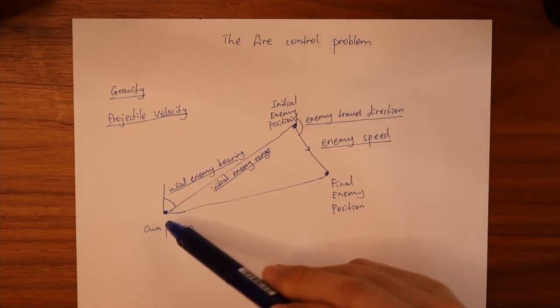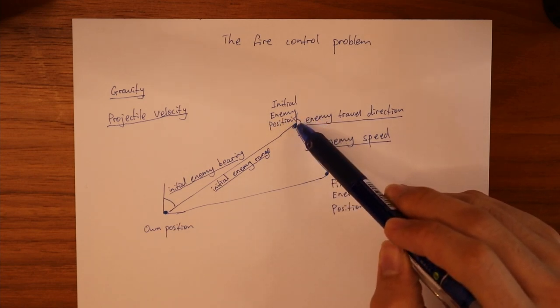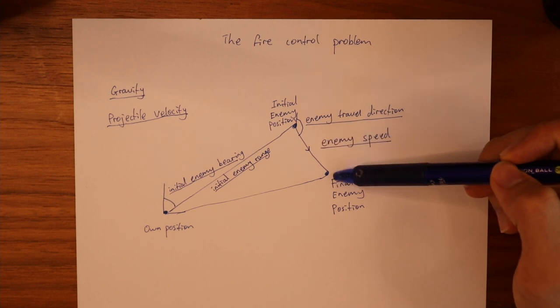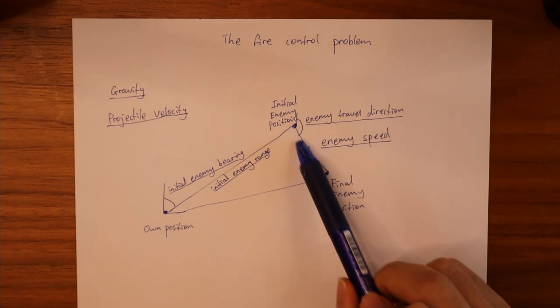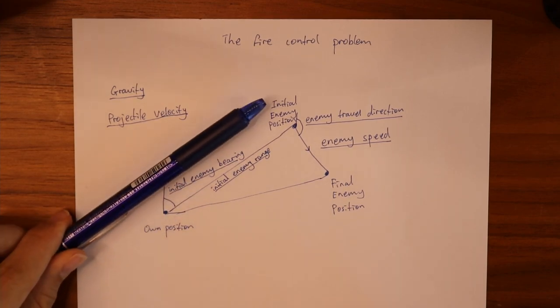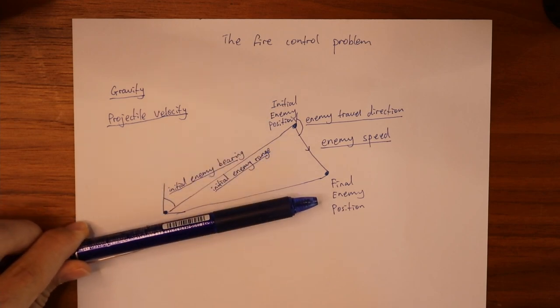Because by the time the projectile has went through the air and impacted the point where the enemy was, the enemy would have moved since this is the enemy travel direction. So this is the point where the enemy will be at the point of impact. So instead of aiming in this direction you need to be aiming in this direction.